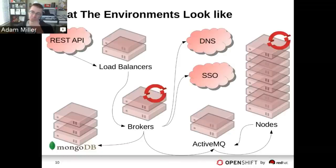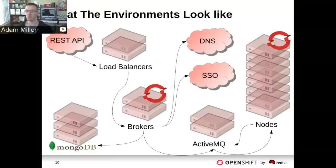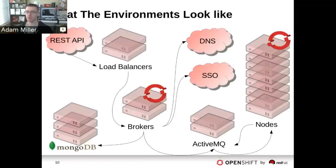We have a set of brokers — two in the diagram, but we actually run four in production. A lot of people ask how we tune Mongo and handle the load in a production environment as large as OpenShift Online. The answer is: we don't. We have a standard three-node replica set, and it has been performant enough that we haven't had to shard or do exotic configuration. We do some indexing of certain collections, but that's about it.